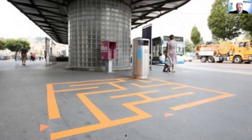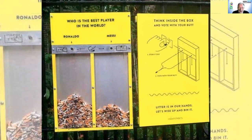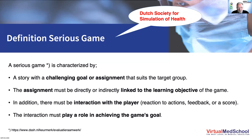You can also design a litter bin as a maze to guide people toward it, or ask a question like Messi vs. Ronaldo to motivate people to make an effort in changing their behavior. This is all about how you change behavior in a way that people are not always fully aware they are being guided. Which leads to the question: what is a serious game?